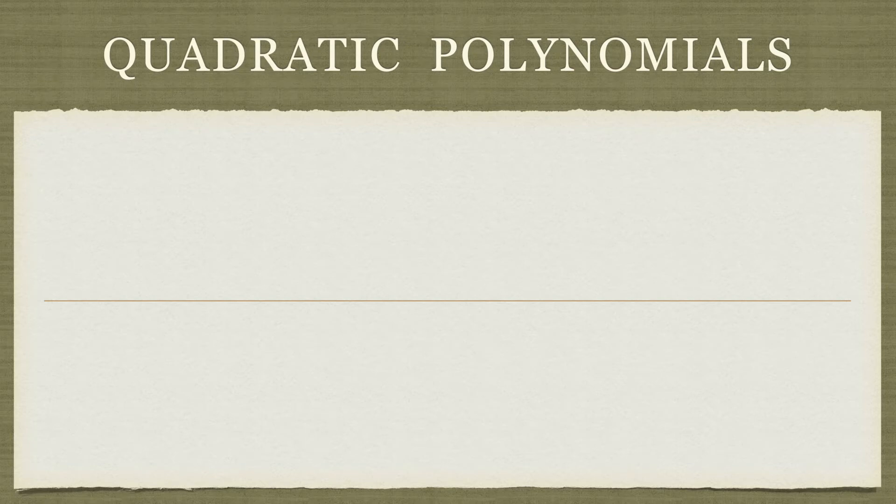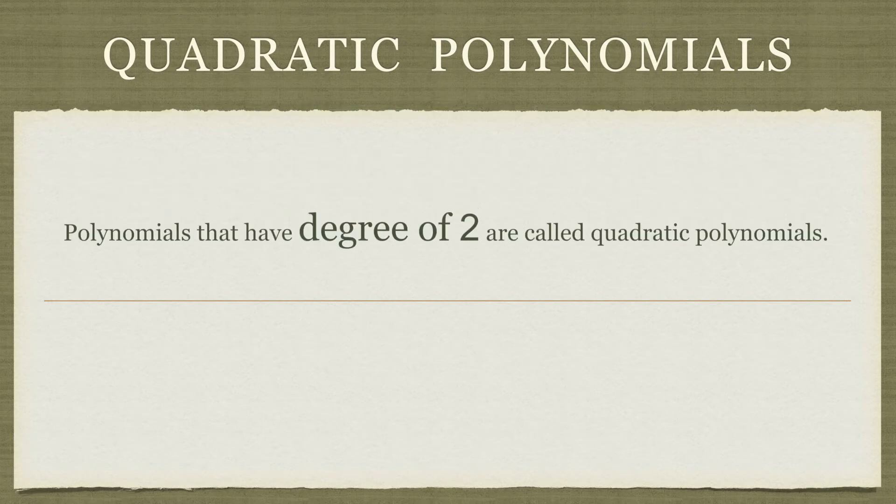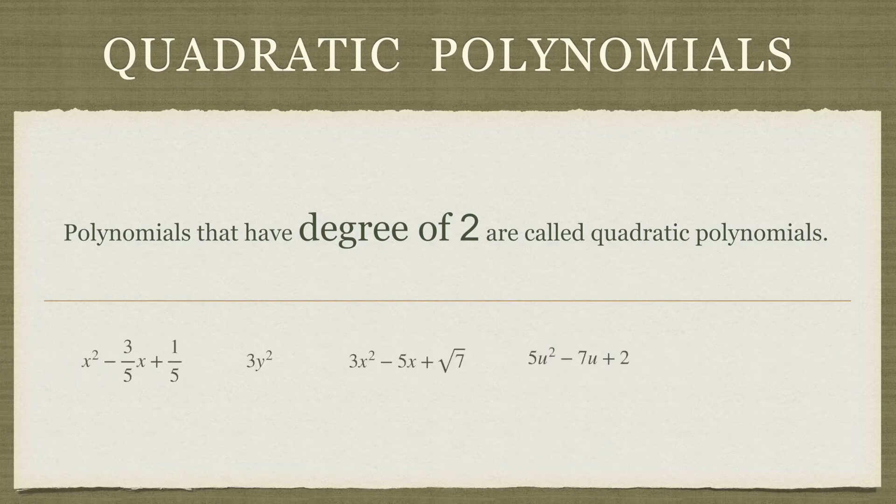What are quadratic polynomials? Polynomials that have a degree of 2 are called quadratic polynomials. Let's take a look at some examples. These are examples of quadratic polynomials.